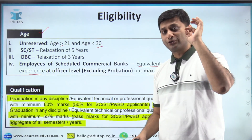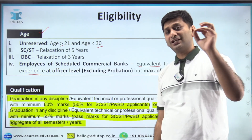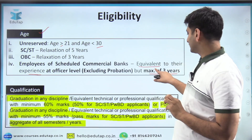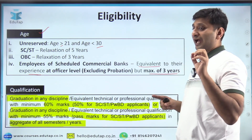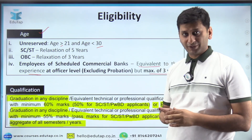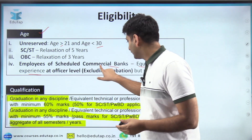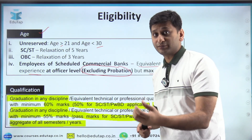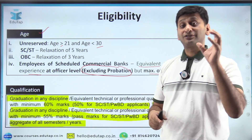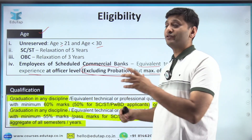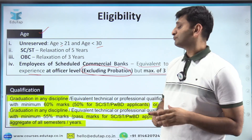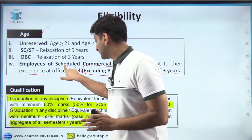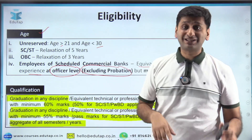If you have two years of experience you get two years of relaxation, three years gives three years, but even if you have four years, the maximum is three years. Importantly, your probation period cannot be included in experience calculation. Also, experience must be counted at an officer level, not at the clerical level.